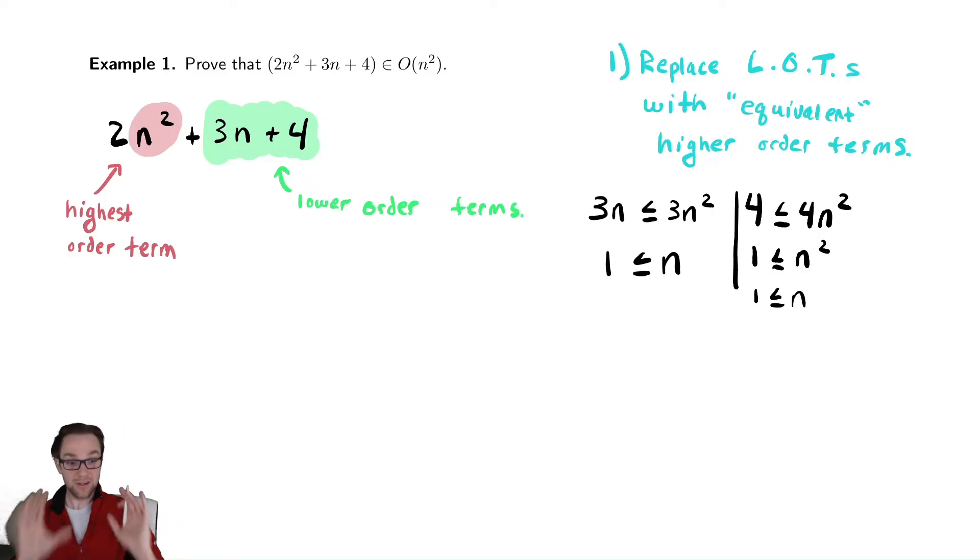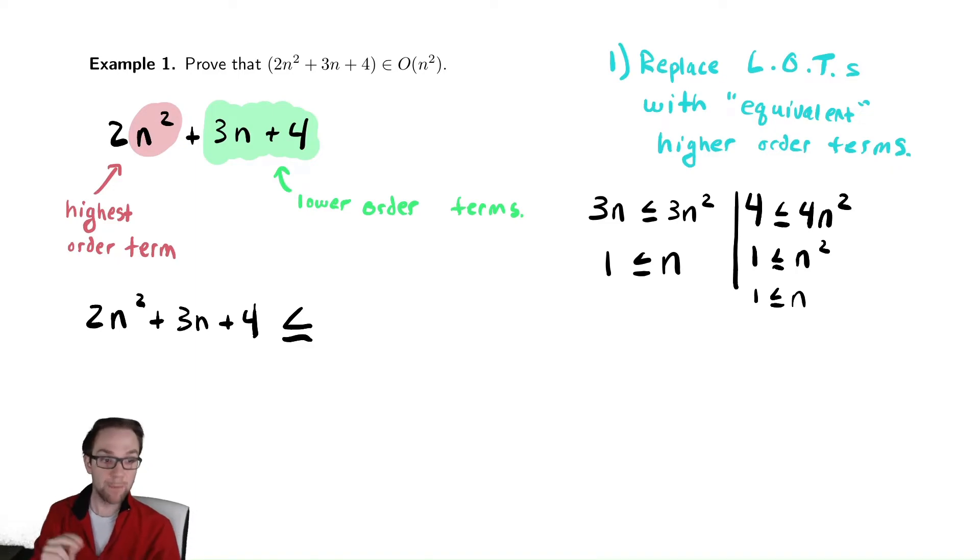So if I want to use those facts, I'm already assuming that my input n is of a certain size. So how do I use those facts? I take the expression 2n² + 3n + 4. I'm going to bound it above. I'm going to make it bigger by replacing 3n with 3n² and 4 with 4n². So I keep the 2n² untouched, change the 3n to 3n², as I just said, and change the 4 to 4n².